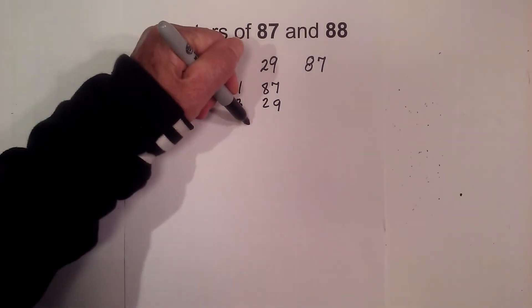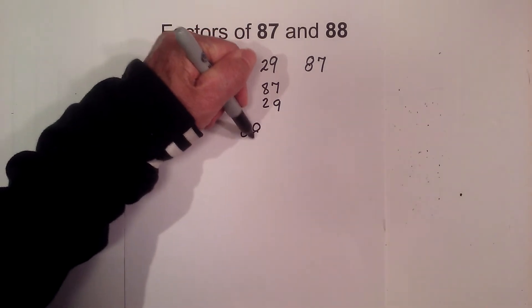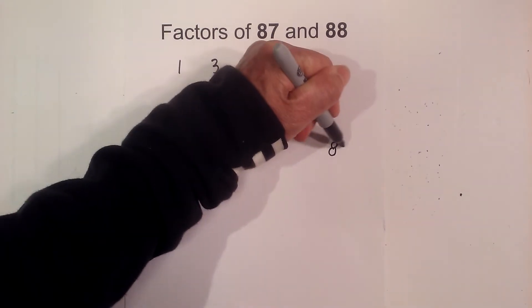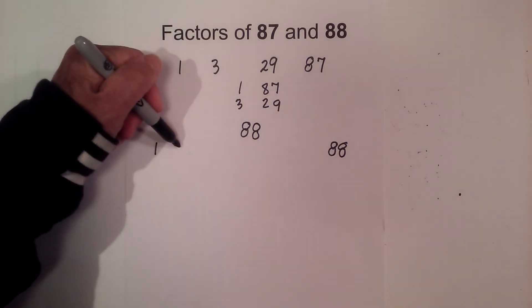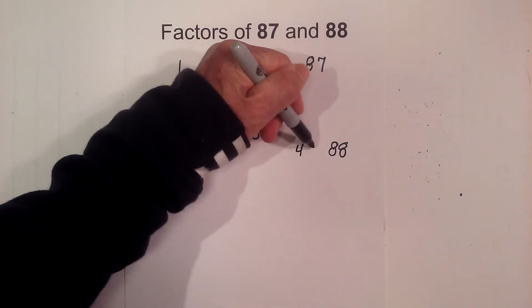Now let's look at 88, and it has a couple more factors. Let's begin with 1 times 88. You know it ends in an even number, so 2 goes into 88 44 times.